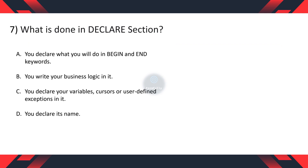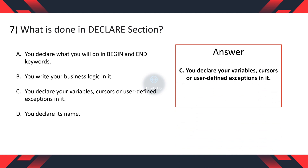Question 7. What is done in the declare section? A. You declare what you will do in the begin and end keywords. B. You write your business logic in it. C. You declare your variables, cursors, or user-defined exceptions in it. D. You declare its name. And the correct option is C — you declare your variables, cursors, or user-defined exceptions in it.